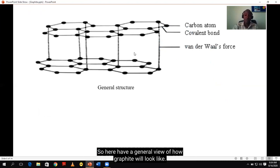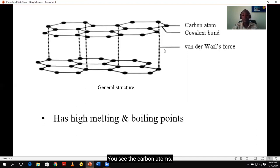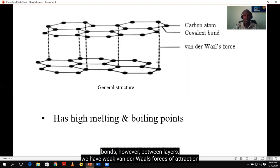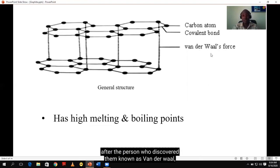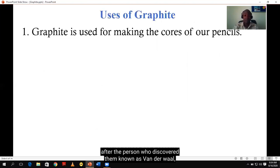So here we have a general view of how graphite will look like. It's made up of layers. Here we have two layers, the upper layer and lower layer. Atoms bonded by covalent bonding, strong covalent bonds. That's why graphite will also have high melting and boiling points. We see the carbon atoms in each layer bonded through covalent bonds. However, between layers, we have weak van der Waals forces of attraction after the person who discovered them, known as van der Waals.